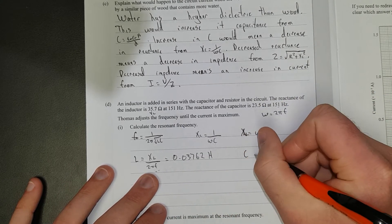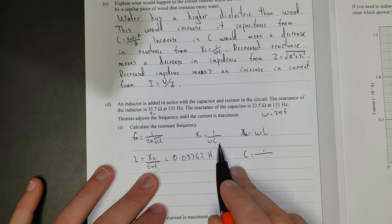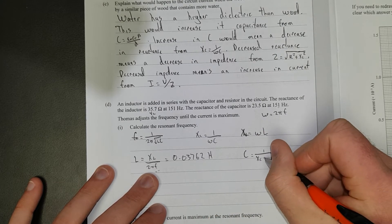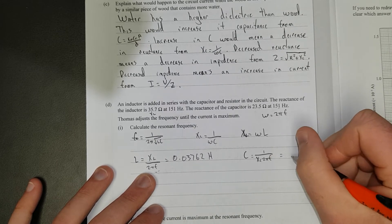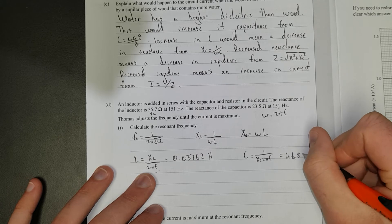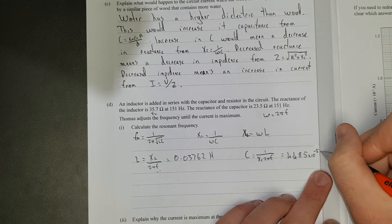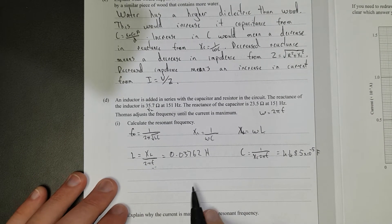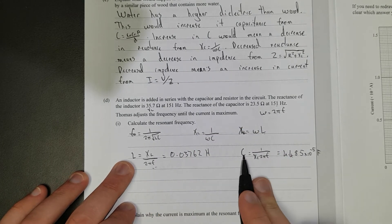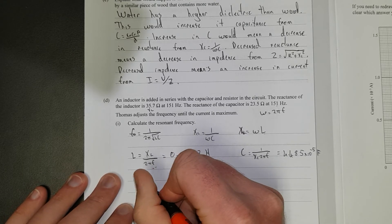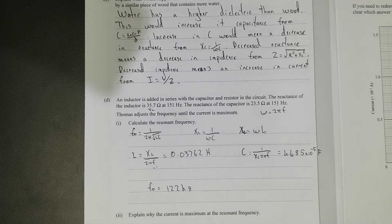For C: C equals 1 over XC times 2πF, because rearranging XC equals 1 over omega C gives C equals 1 over XC times 2πF. That gives 4.485 times 10 to the negative 5 Farads. Finally, substituting L and C into the resonant frequency formula F₀ equals 1 over 2π√(LC) gives a frequency of 122 hertz.